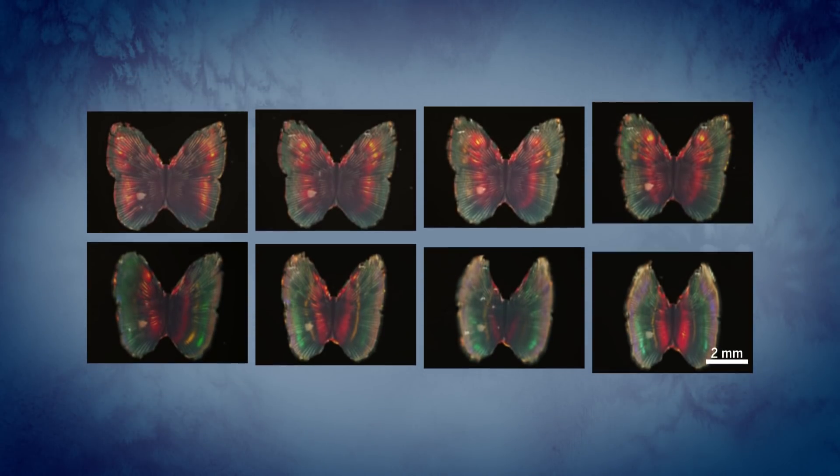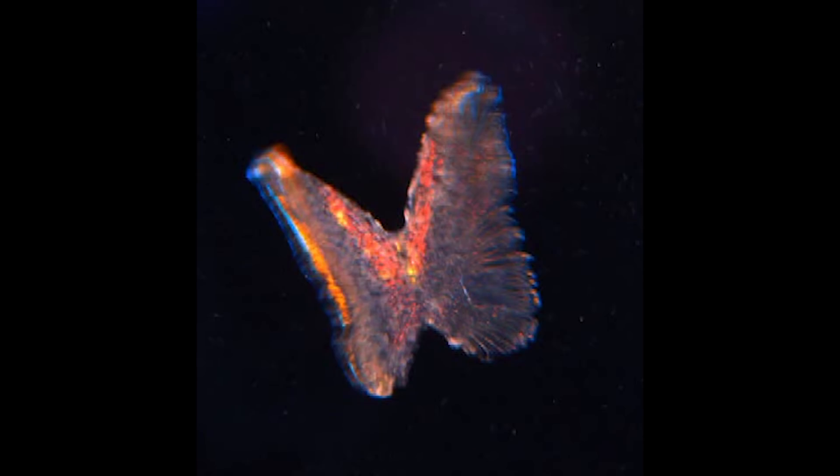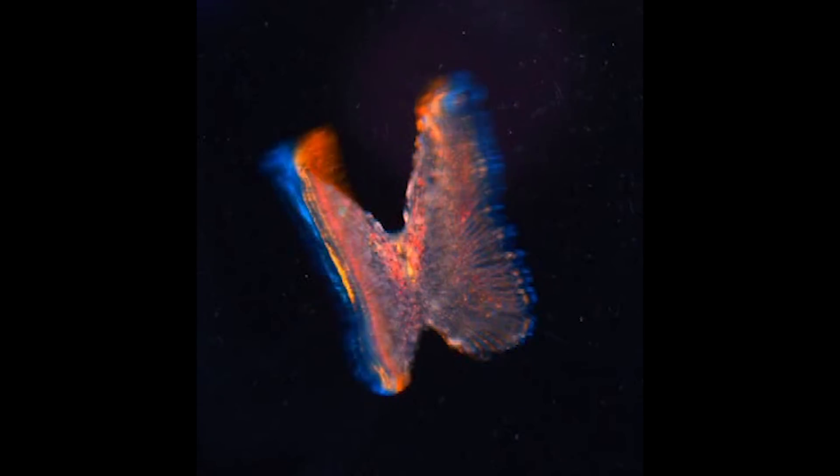By placing cells into tiny, patterned grooves in the gel, the team was able to create a material that mimics a tiny butterfly flapping its wings. As the cells expand and contract, the wings move, displaying a changing structural color.